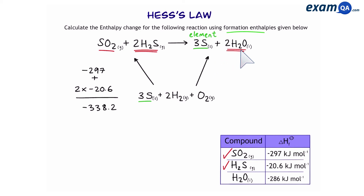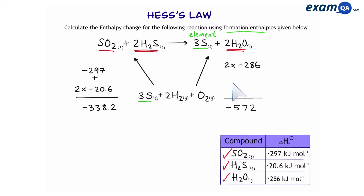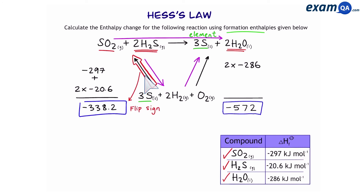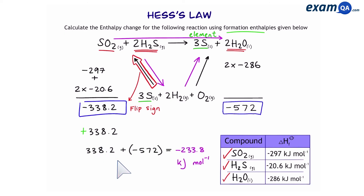Can water be formed from its elements? Yes — water is a compound and the enthalpy change of formation of water is given. Since we have two water molecules, we multiply by two, giving a total of minus 572 for the right side. Now, looking at which arrow is going the wrong way — Hess's law says to go down then up, which means the left arrow is going in the wrong direction, so we flip the sign to give plus 338.2. Adding them together gives a final answer of minus 233.8, which is the overall enthalpy change for the reaction.